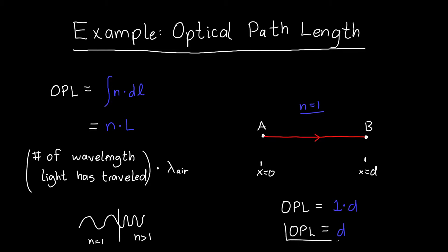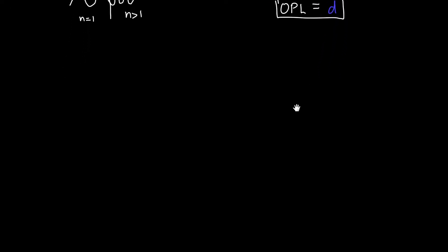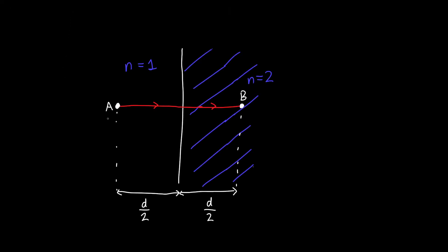The optical path length is just equal to D. This makes sense — light starts at point A and travels a distance D, so the optical path length is the same as the distance. That's nice and simple. Now let's do an example that's a little more complicated. Light starts at point A, travels a distance D/2 in a medium of refractive index n equals 1, then switches to a medium of refractive index n equals 2, and travels another distance D/2 to reach point B.